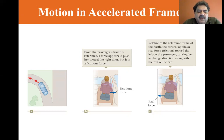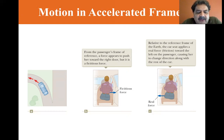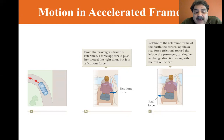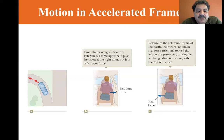Before the car enters the ramp, the passenger is moving in a straight line path. As the car enters the ramp and travels the curved path, the passenger tends to move along the original straight line path. Newton's first law — the natural tendency of an object is to continue moving in a straight line — is the law of inertia.